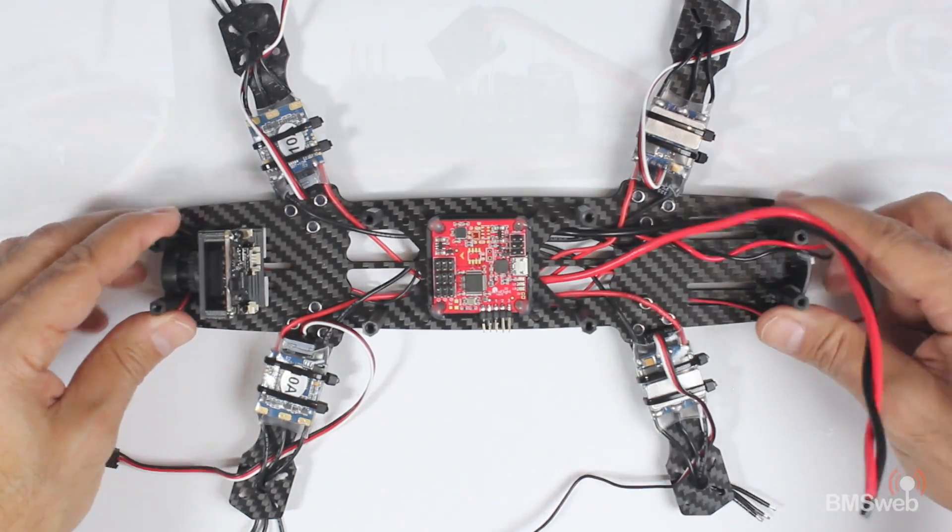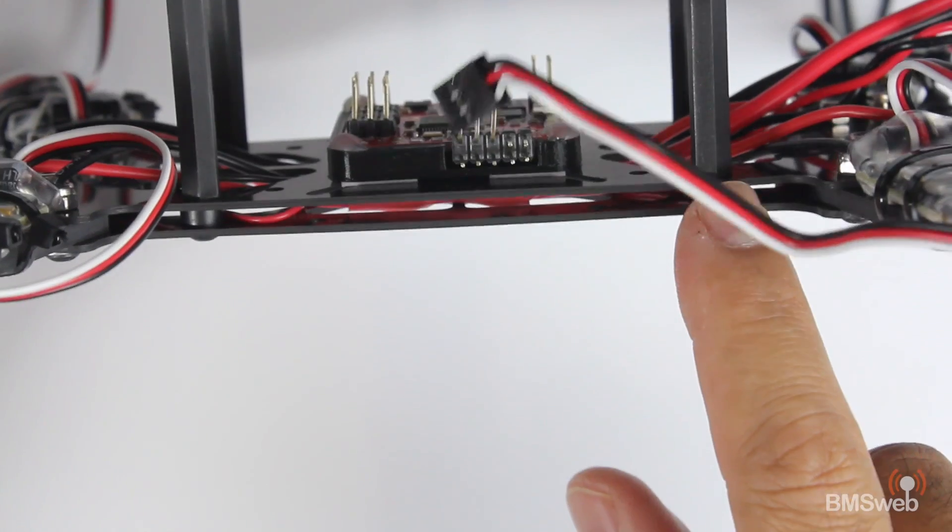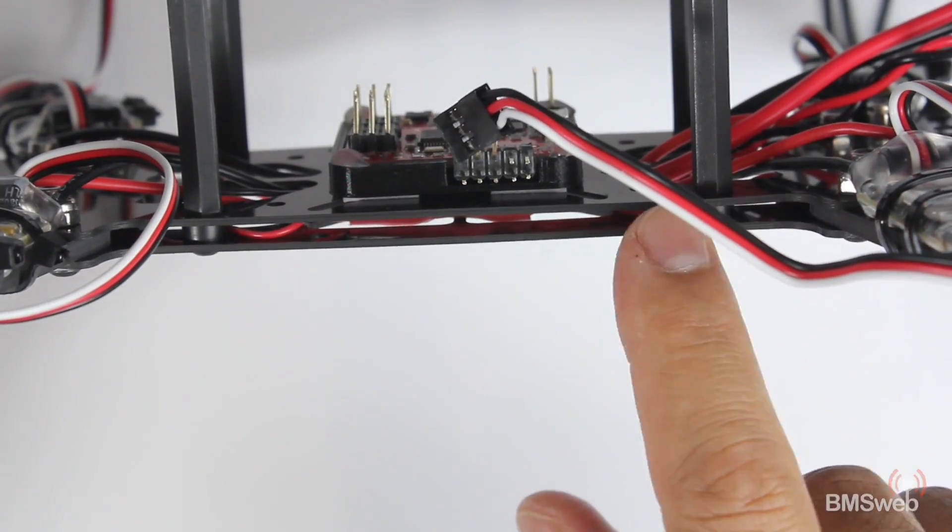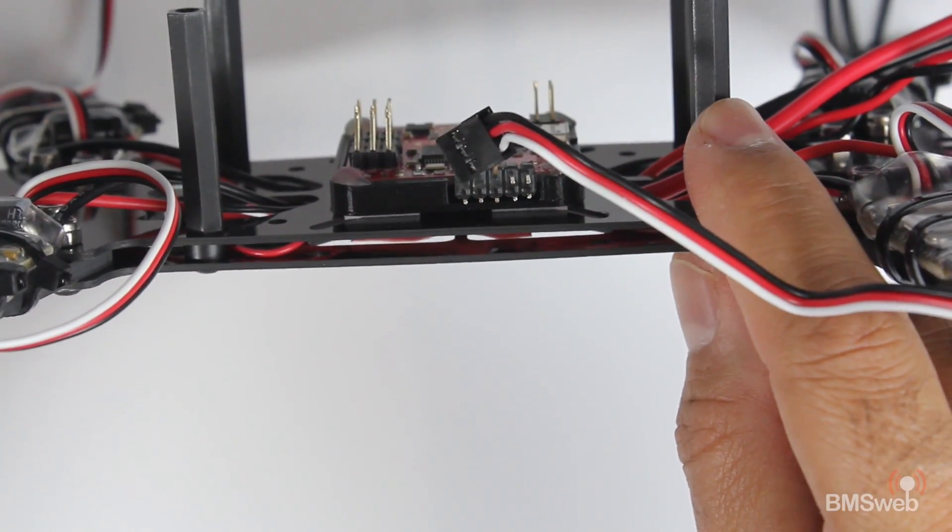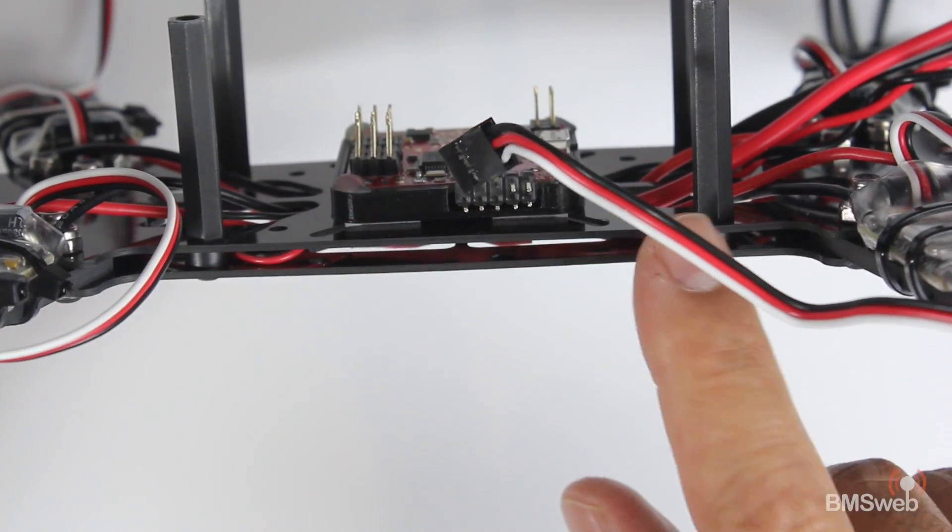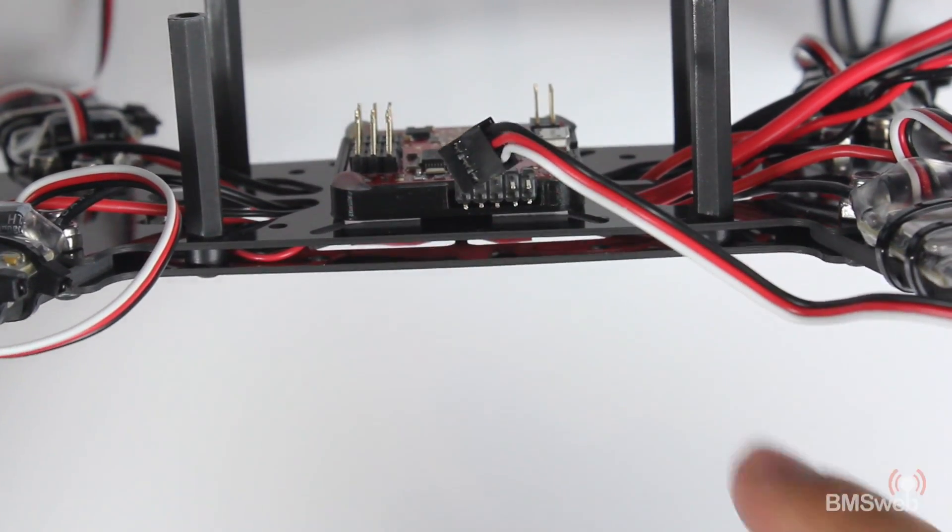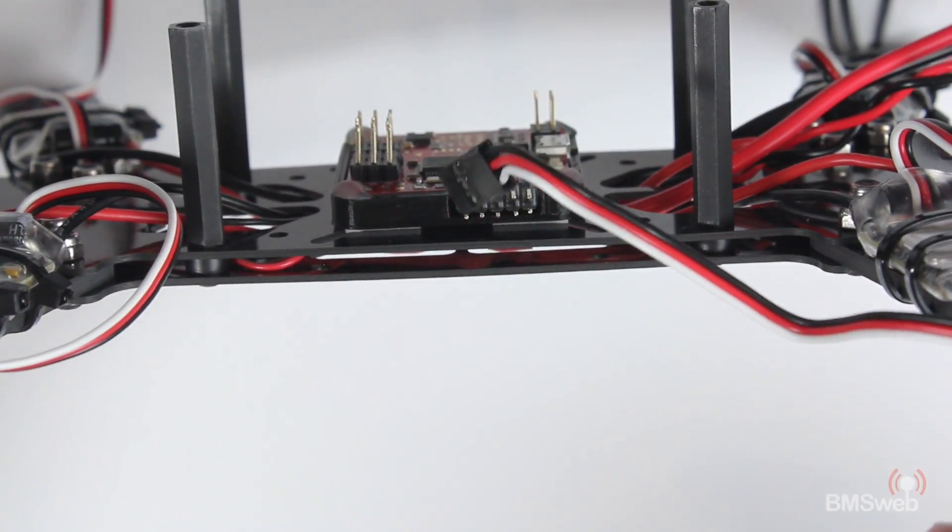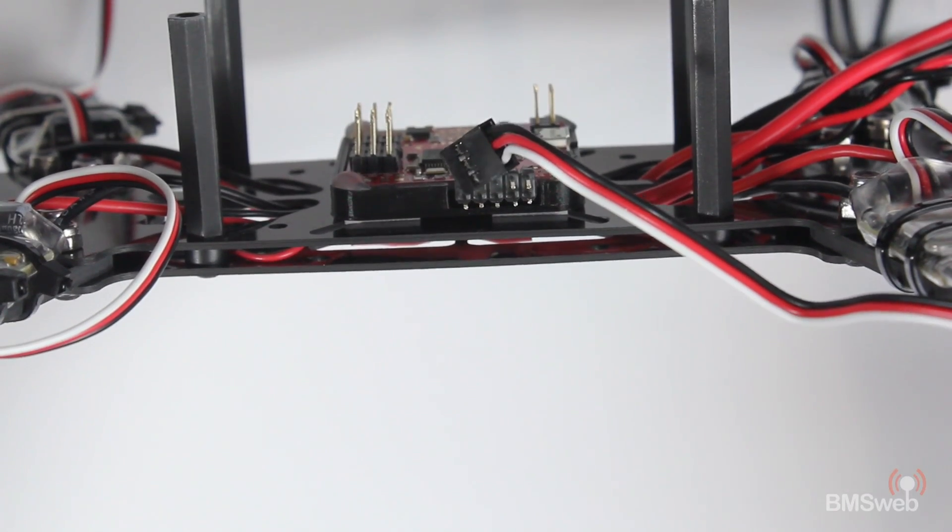I was originally going to do it with the lift kit, which allows you to separate these two plates. It gives you just over a centimeter separation, allowing you to fit a lot more electronics underneath, including your wiring, power distribution, and even your ESCs.